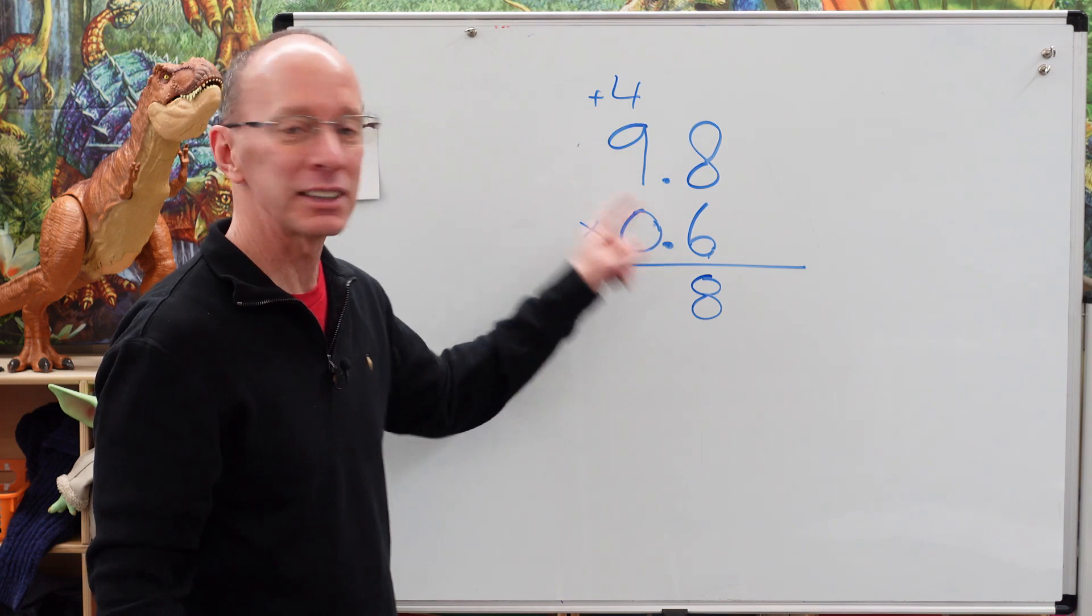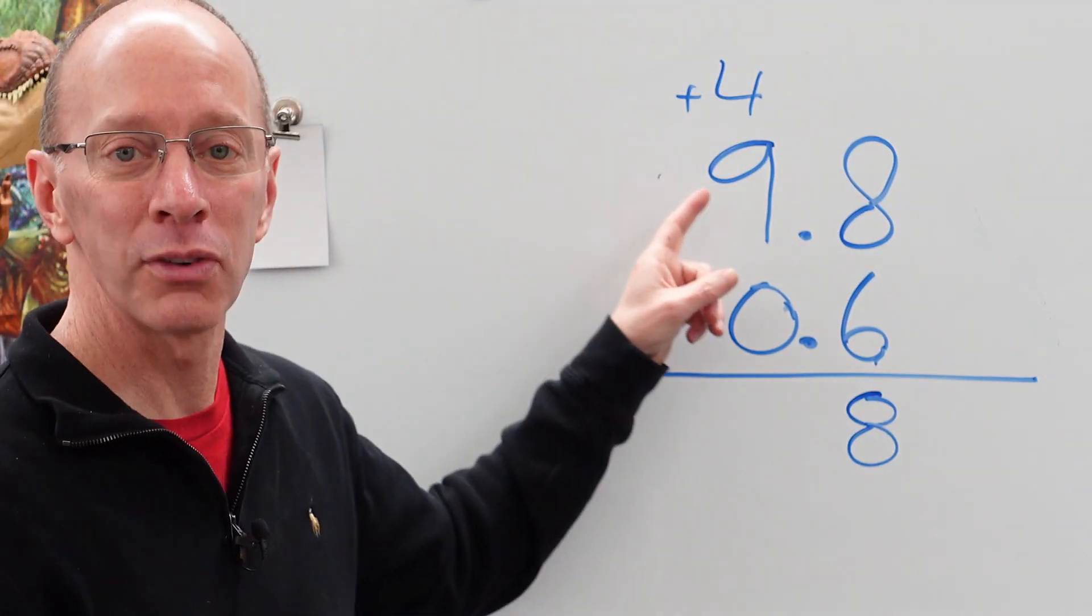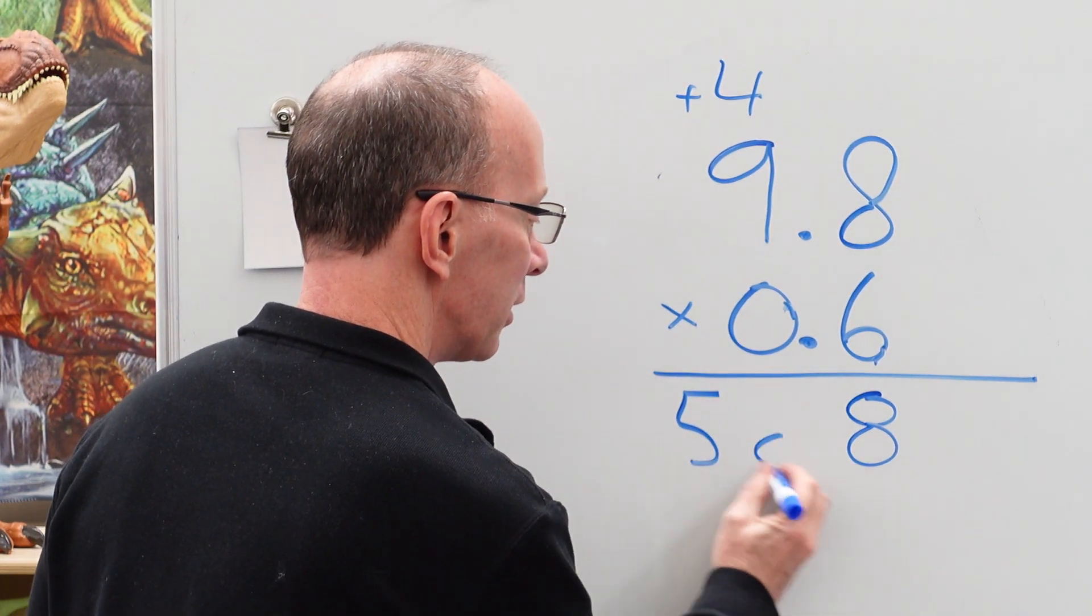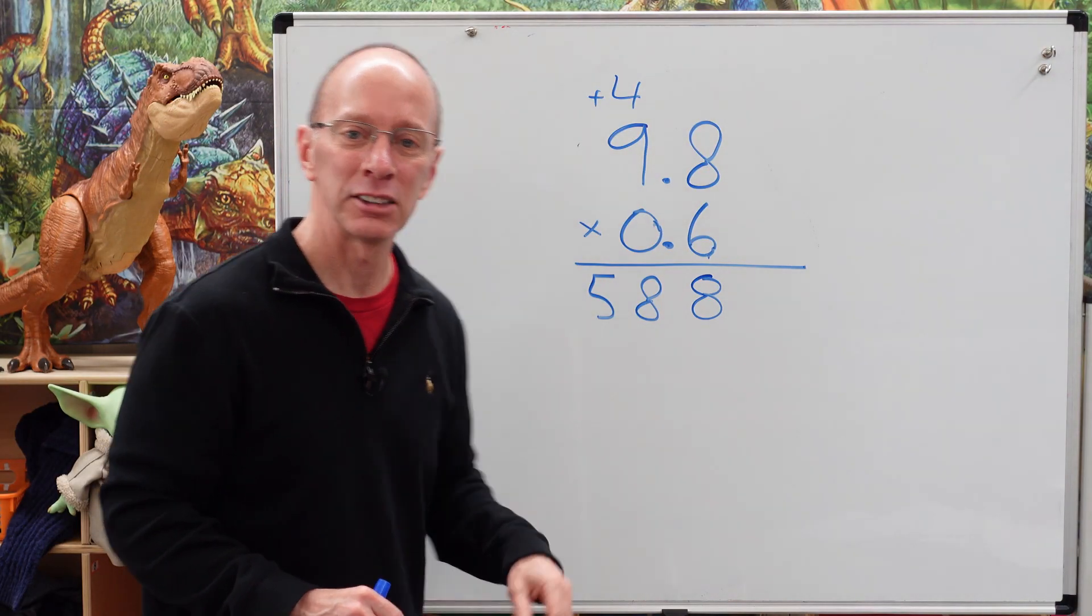All right. 6 times 9. 54. Plus the 4. 58. Put the 8 right here. Okay. All right.